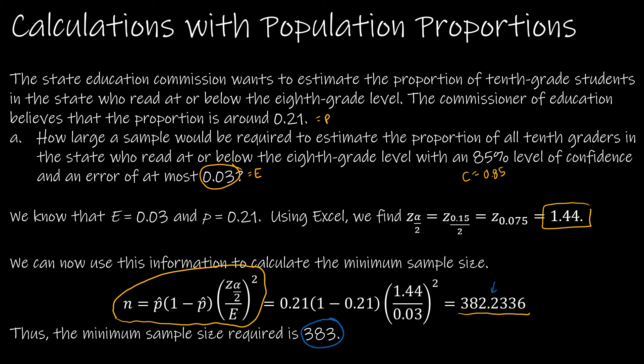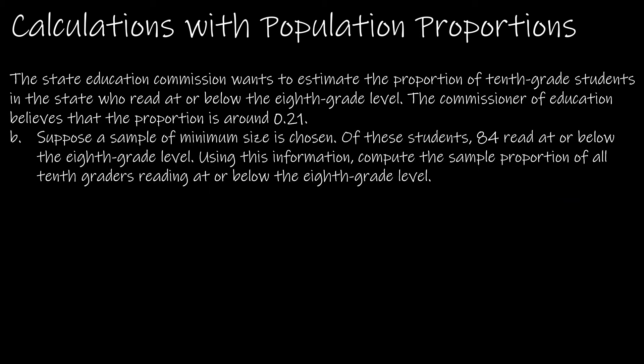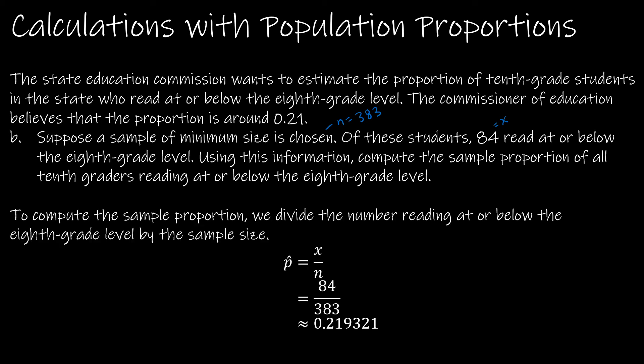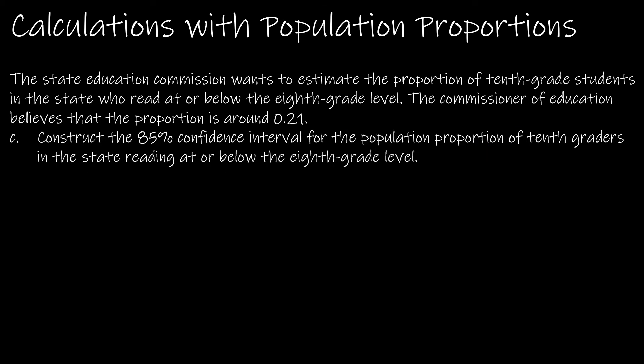The next question says suppose we take n is 383. Of these students, 84 read at or below the eighth grade level. So that's x, this is n. Using this information, compute the sample proportion of all 10th graders reading at or below the eighth grade level. We're going to find p hat. P hat is x over n. x is 84, n is 383, so we get 0.219321. Don't round it.